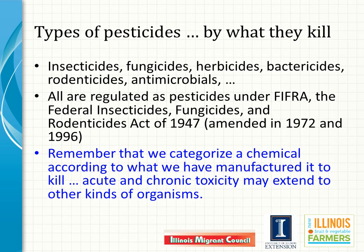We name pesticides according to what we intend to kill or control with them. Insecticides are for insect control. Fungicides for control of plant pathogenic fungi. Herbicides for weed control. Several other -icides are all pesticides, and all are regulated under the Federal Insecticide, Fungicide, and Rodenticide Act and its amendments. It's important to realize that we use many substances to control unwanted organisms, not just insects and weeds in crops, but bacteria in swimming pools and bathrooms and on kitchen counters, and mice that may invade houses or crops. Many may be toxic at some level to other organisms, either immediately or over the course of repeated chronic exposures at low doses. Developing and using pesticides with minimal adverse effects on non-target organisms is an ongoing goal for manufacturers, users, and consumers.